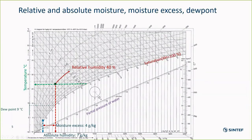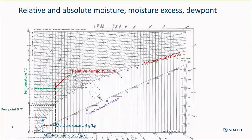A note on different ways of measuring moisture. Relative humidity is absolutely a useful measure, but in many situations it's more interesting and perhaps more practical to use other ways of stating moisture content, like absolute humidity, moisture excess, or dew point. As you all know, the relative humidity changes when the temperature changes — a relative humidity could increase by eight percent when you decrease the temperature from 23 to 20 degrees.